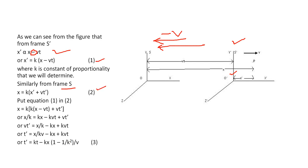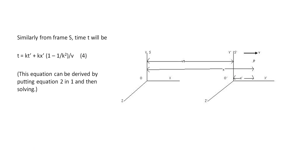Now put equation 1 into equation 2. By simple calculations, you get X' equals k times k(X minus vt) plus vt'. Or X' over k equals kX minus kvt plus vt'. Then vt' equals X over k minus kX plus kvt. Solving, t' equals kt minus kx times (1 minus 1/k²) over v. This is equation 3. Similarly from frame S, t equals kt' plus kx' times (1 minus 1/k²) over v, which is equation 4, derived by putting equation 2 into equation 1.